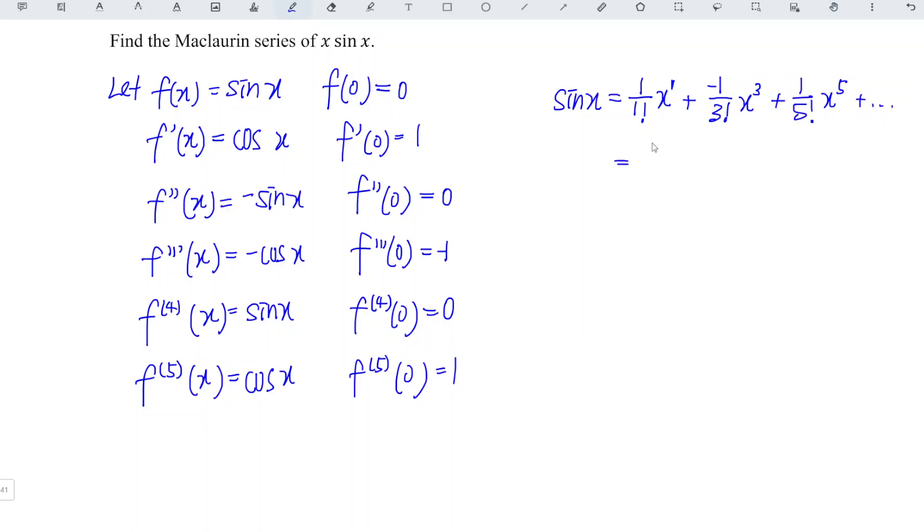Let's simplify. We should have x minus 1 over 6 x cubed, and we plus 1 over 120 x to the power of 5, and so on.